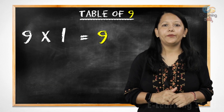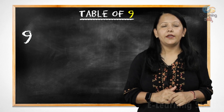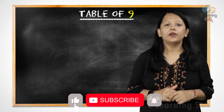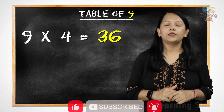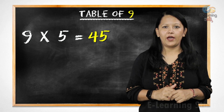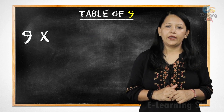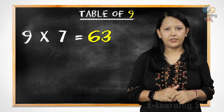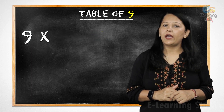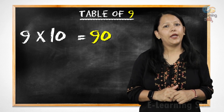9 ones are 9, 9 twos are 18, 9 threes are 27, 9 fours are 36, 9 fives are 45, 9 sixes are 54, 9 sevens are 63, 9 eights are 72, 9 nines are 81, 9 tens are 90.